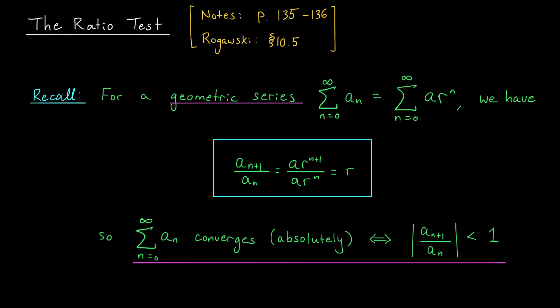Our motivation for the ratio test actually comes from geometric series. If you have a geometric series with terms a_n given by a·r^n, we can fully understand the convergence of this series if we know the value of r — the common ratio. If you take any term a_{n+1} and divide it by the previous term a_n, everything cancels out and you're just left with this constant r. Now if |r| is greater than or equal to 1, your series diverges. If |r| is less than 1, your series converges — and in fact it converges absolutely. The signs of your terms don't matter; it's just the absolute value of this ratio.